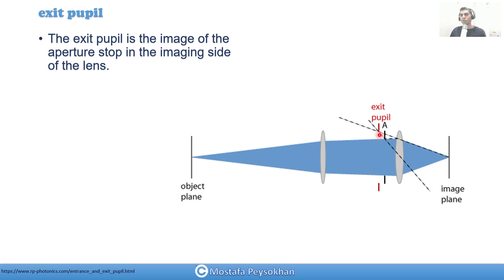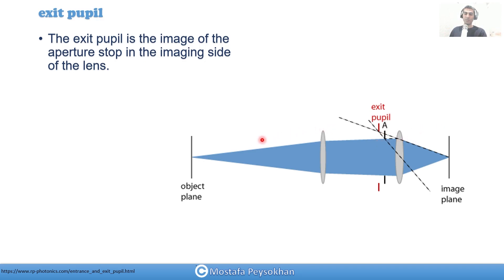The image of the stop on the image side is your exit pupil. In this example, the stop is very close to a concave lens, so there's no actual real image — it's a virtual image. If you continue the lines, that gives you the position of the exit pupil. Sometimes the exit pupil can be inside the system, sometimes outside, depending on the optics used.